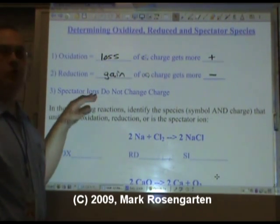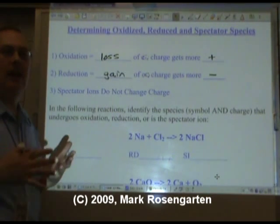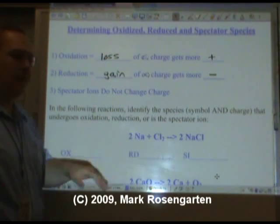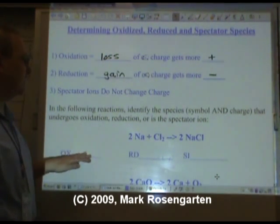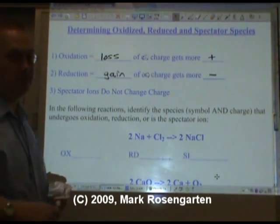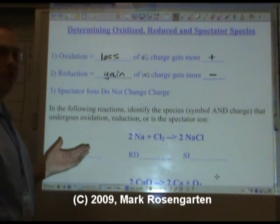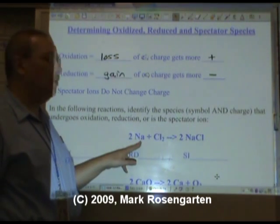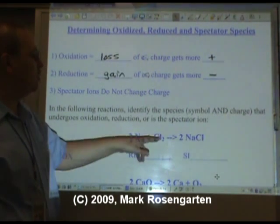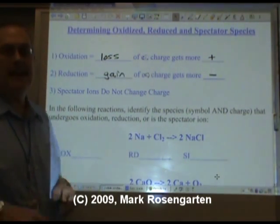Spectator ions don't change charge. They just hang around and they don't participate in the reaction. Now for this reaction, in order to find out what species is oxidized and what species is reduced and what species, if any, is the spectator ion, we need to know what happens to the charge of sodium as it goes from being a reactant to being a product, and what happens to the charge of chlorine as it does the same.